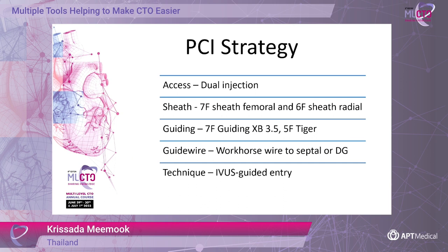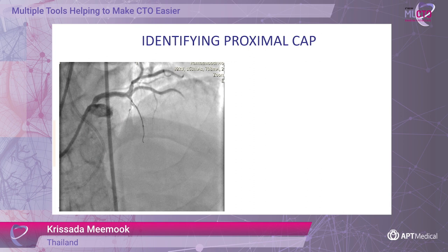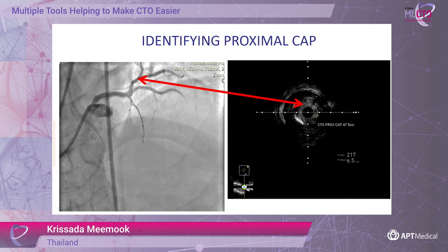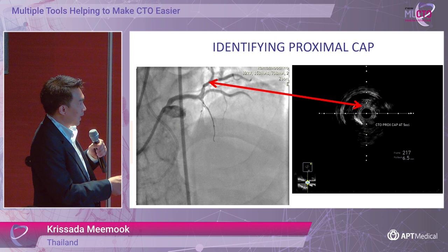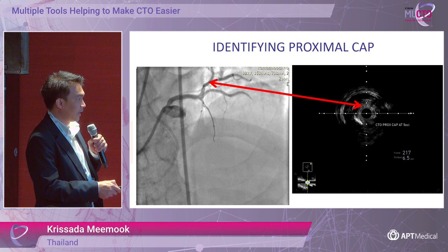This is the strategy for PCI in this case. We planned to use dual injection, using a 7F femoral and 6F radial from the diagnostic procedure, and an XB 3.5 guide catheter for the antegrade approach. First, we put the wire into the first diagonal or nearby branch, but we could not clearly see the proximal cap. Then we put the guidewire into the first septal branch and checked the angle to visualize the proximal cap. Using IVUS, you can see the proximal cap of the CTO at the 5 o'clock position — meaning the true proximal cap is here, not there.